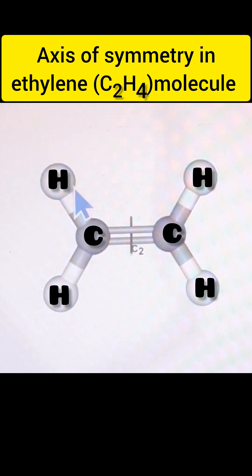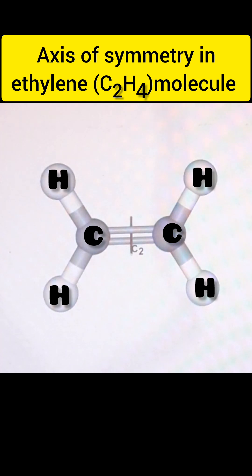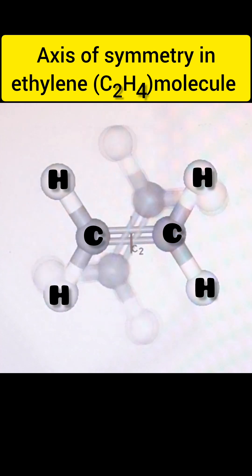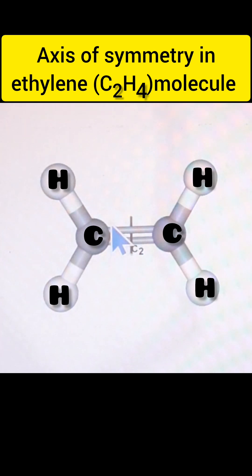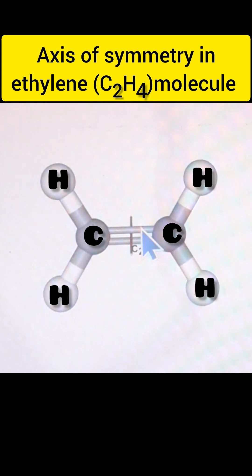When we rotate the molecule 180 degrees we get the same configuration before and after the rotation. The next C2 axis is also passing through the carbon-carbon bond like this.